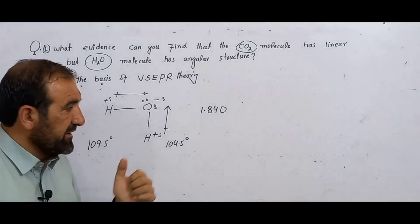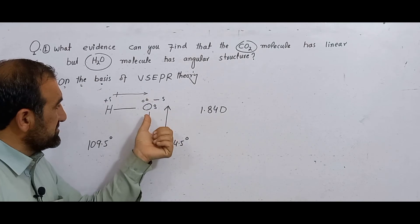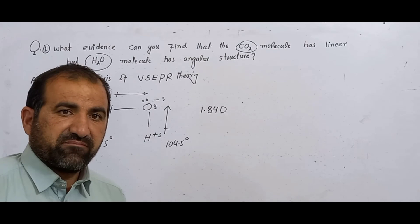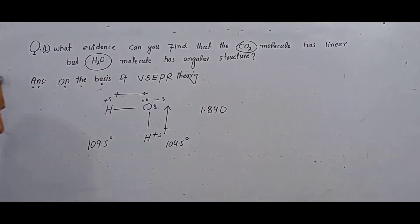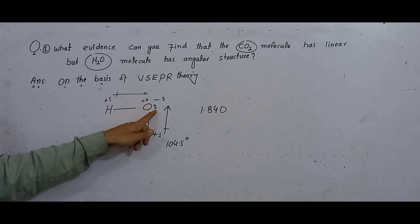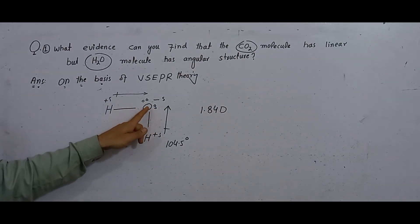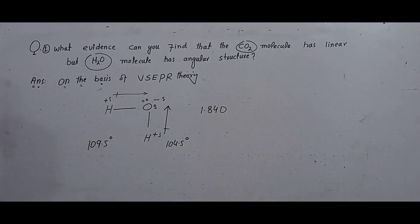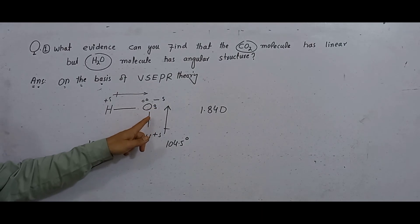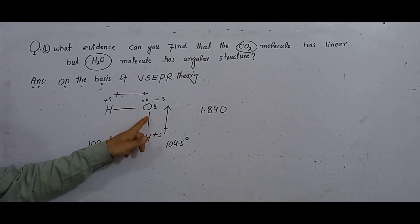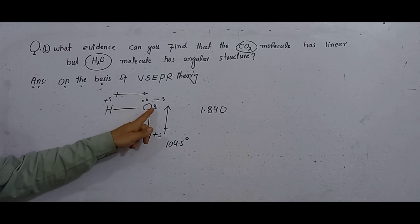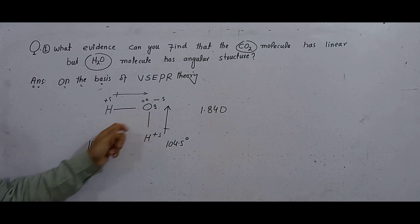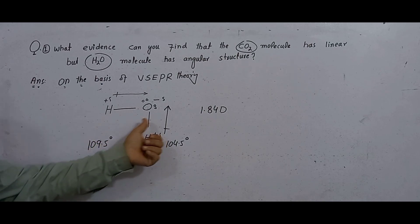According to VSEPR theory, these electron pairs arrange themselves around the central atom in such a way to have maximum distance and minimum repulsion. Also, according to this theory, the lone pair of electrons occupies more space. Therefore, the repulsion is greater from the lone pair than from a bond pair. So this lone pair will push the bond pairs inward, reducing the bond angle.